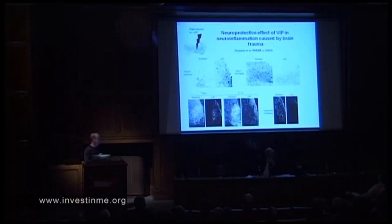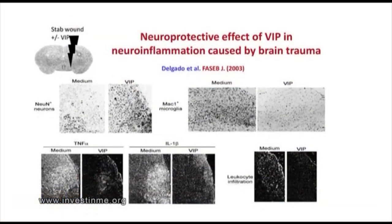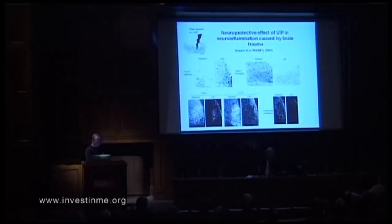Here is an example of a brain trauma model, in which trauma is induced in one area of the brain. You can see a huge neurodegeneration due to inflammation, with massive microglial activation, production of inflammatory mediators, and recruitment of immune cells to the injury site. The injection of VIP/BAP after the trauma prevents this neurodegeneration by inhibiting microglial activation and inflammatory cell recruitment to the site of injury.